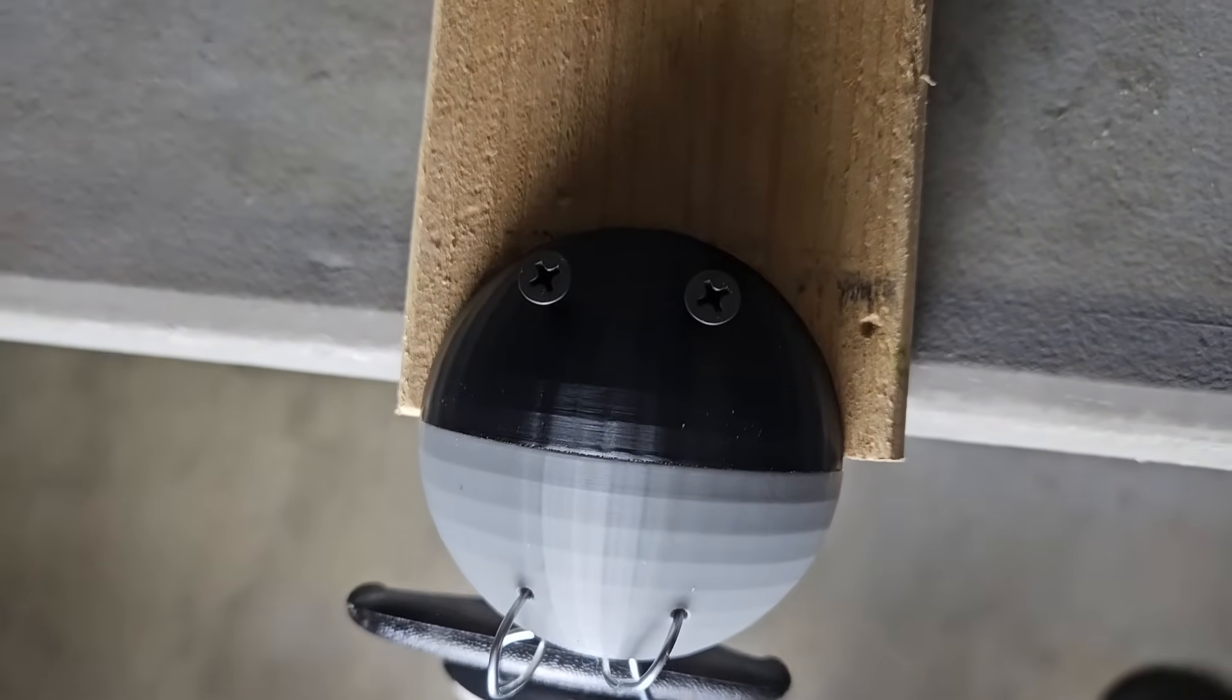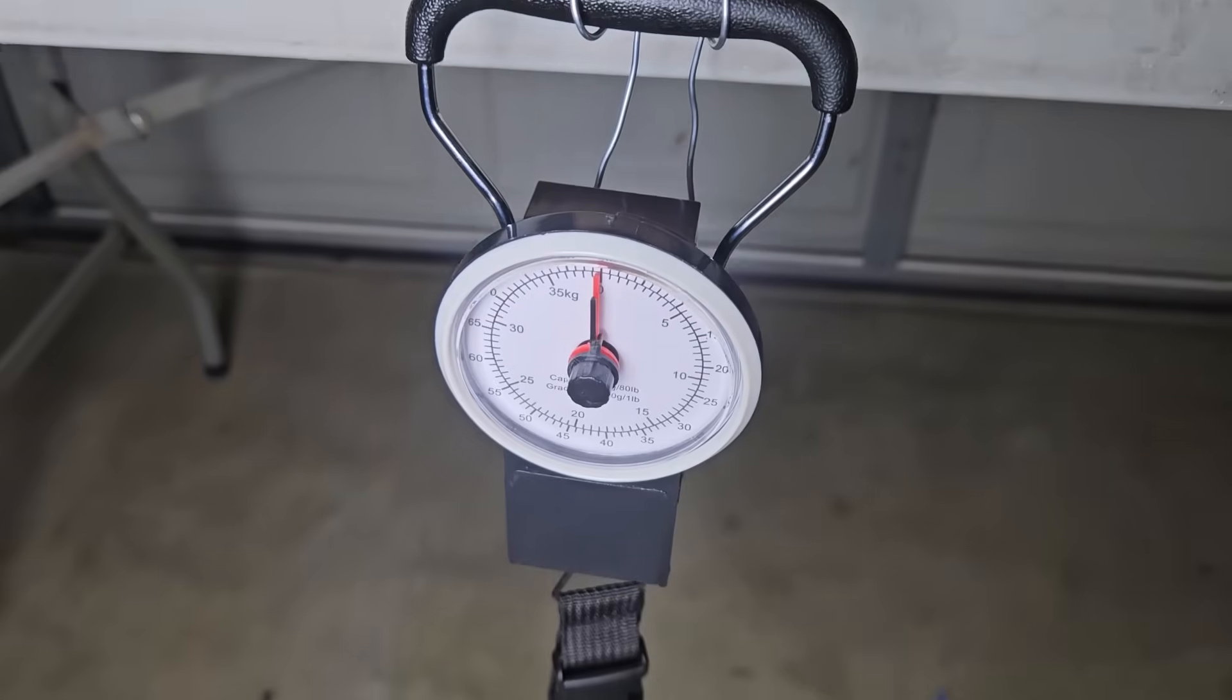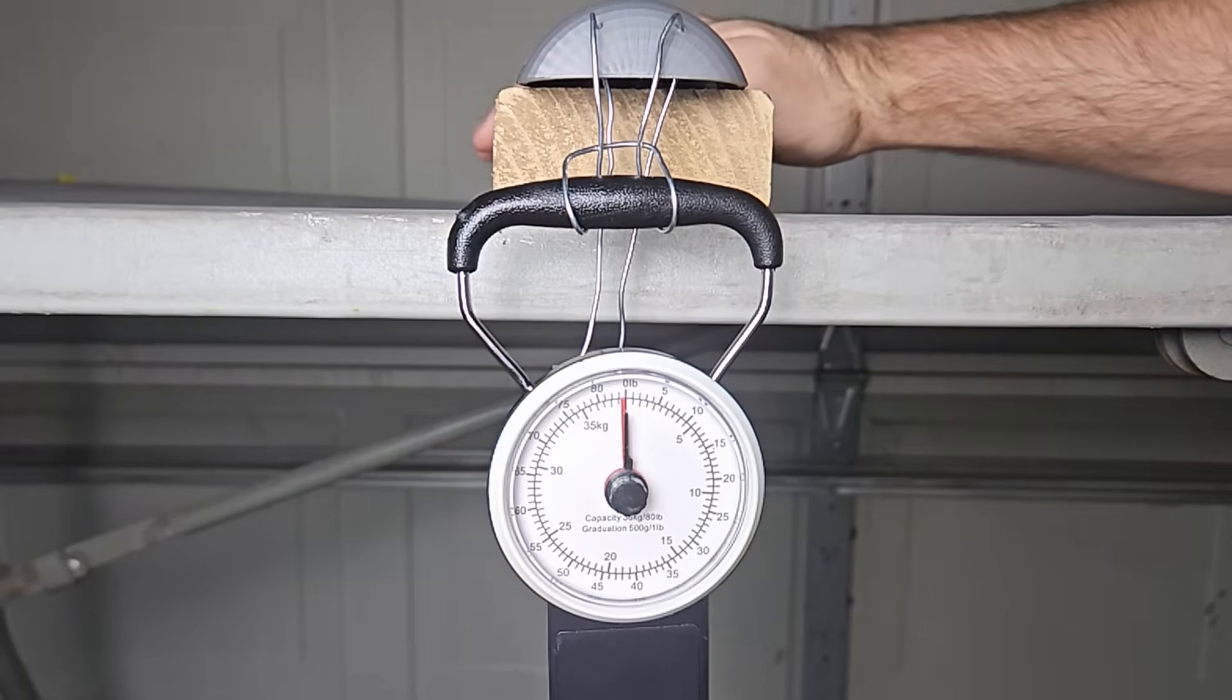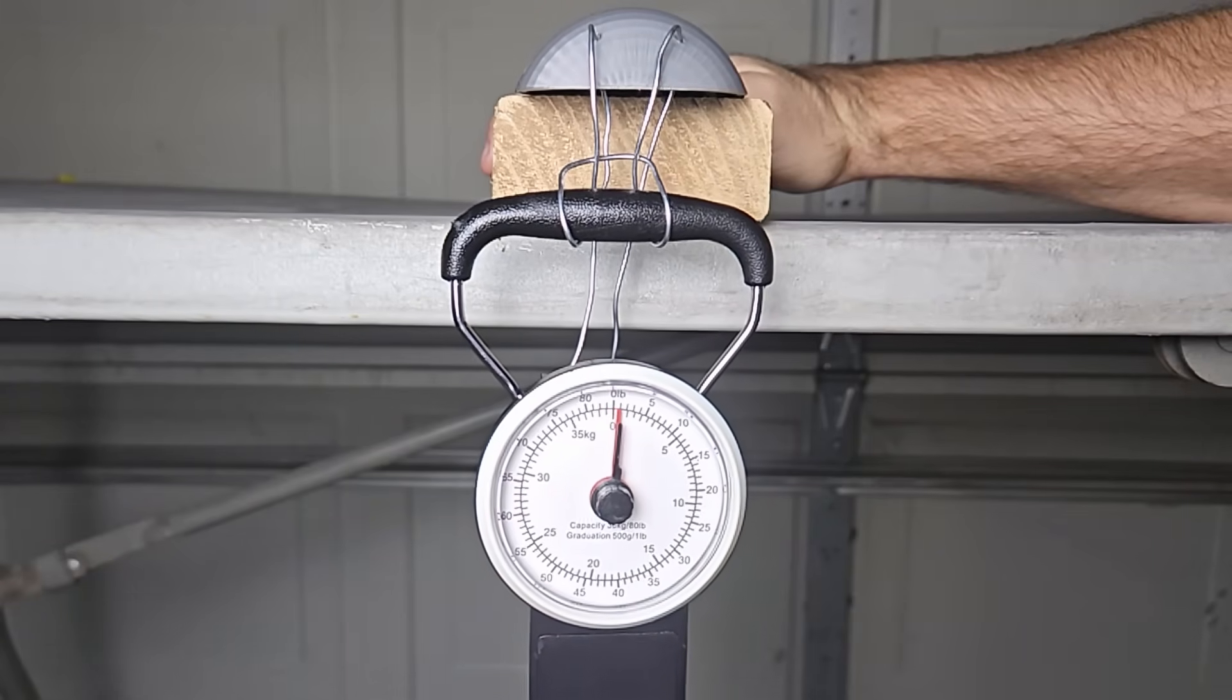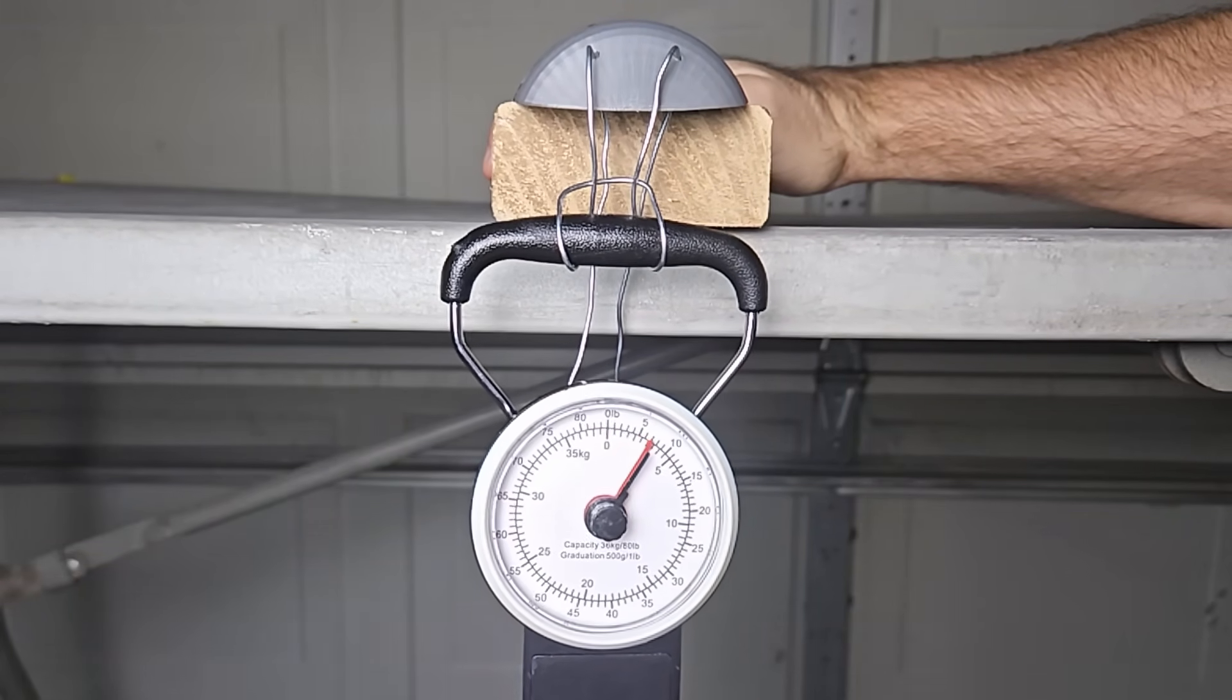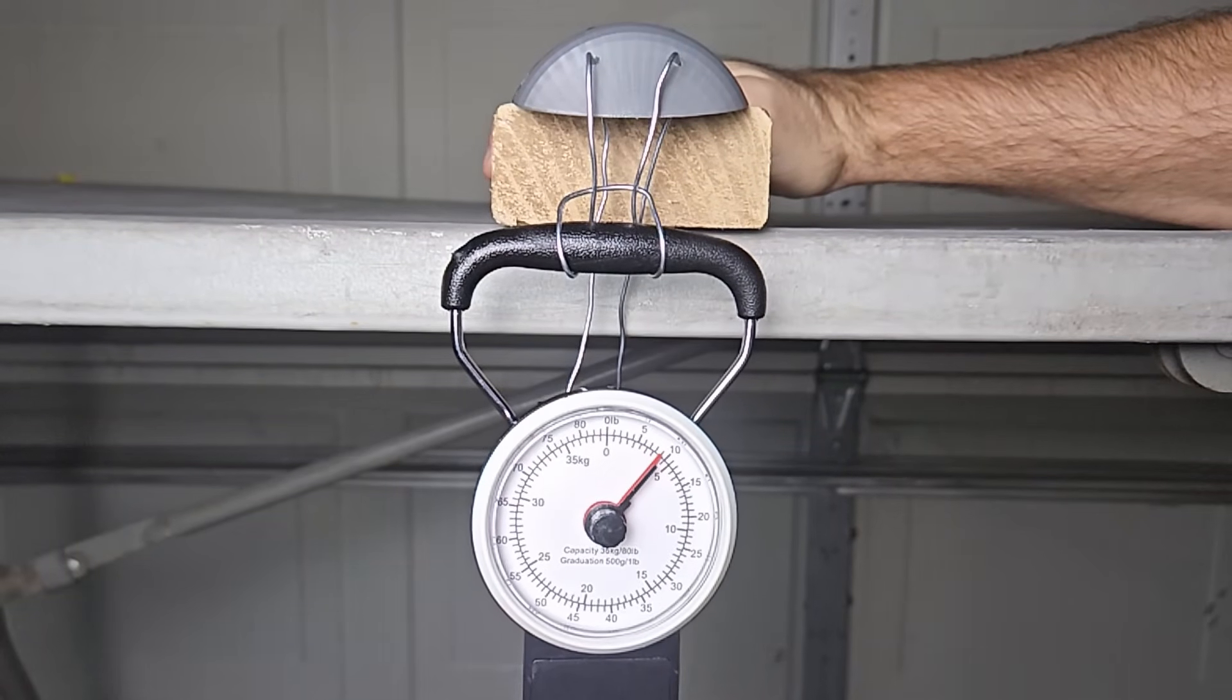Now let's see how well these hold together. I set up a simple test with things I had laying around and I got a cheap luggage scale. One half of the print is screwed down and the other half is hanging over with the scale attached. The first test is with the super glue. Let's see how many pounds I can apply before it breaks.